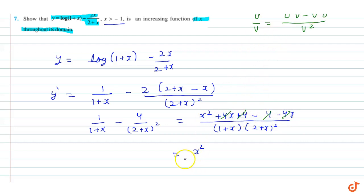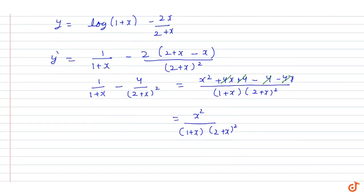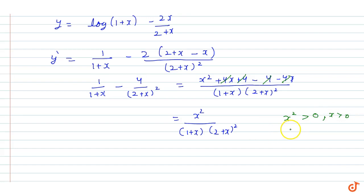After simplification, y dash equals x square upon (1 + x) into (2 + x) whole square. We know that x square is always greater than or equal to 0. Similarly, (2 + x) whole square is always greater than 0.